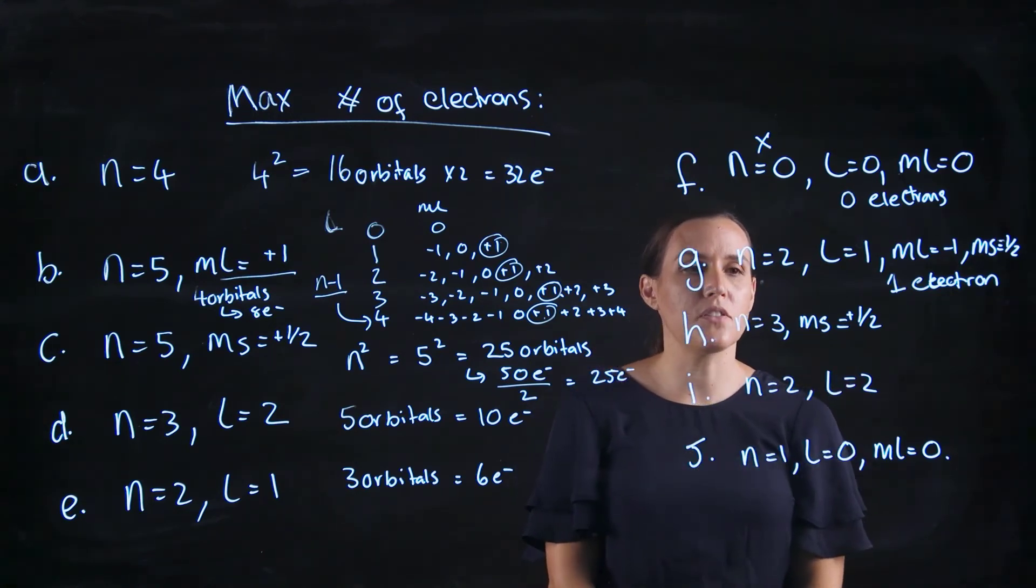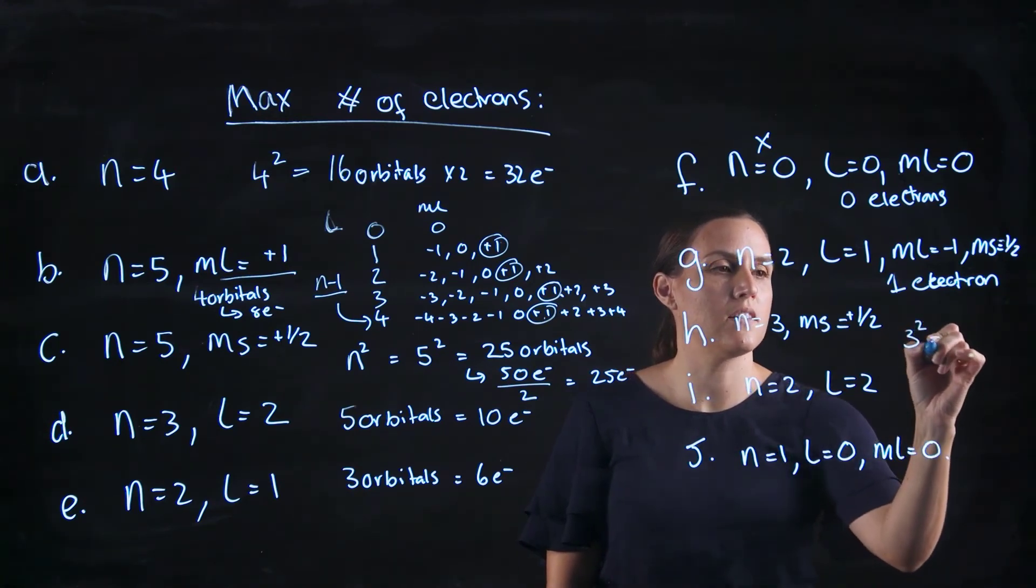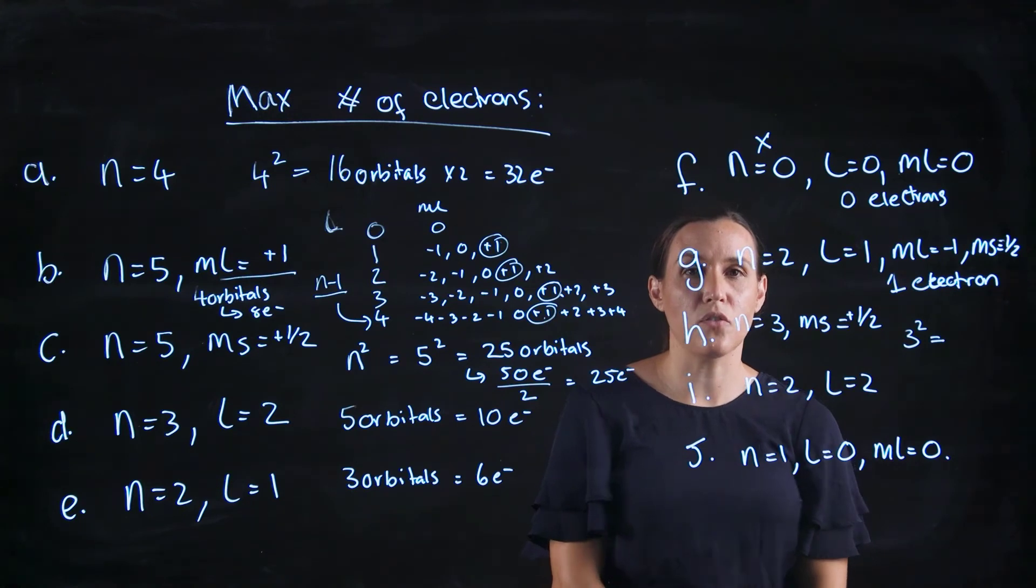Next we have n equals 3 and ms equals plus a half. So we go, remember, 3 squared, which would give us our value for our orbitals.